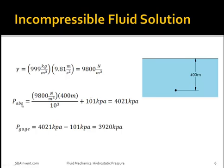Now that the specific weight is known, solve for absolute pressure: 9800 newtons per meter cubed times the depth of 400 meters, divided by 10 to the third to convert to kilopascals, plus the atmospheric pressure, considering the 400 meters does not include the atmospheric pressure. This equals 4021 kilopascals.